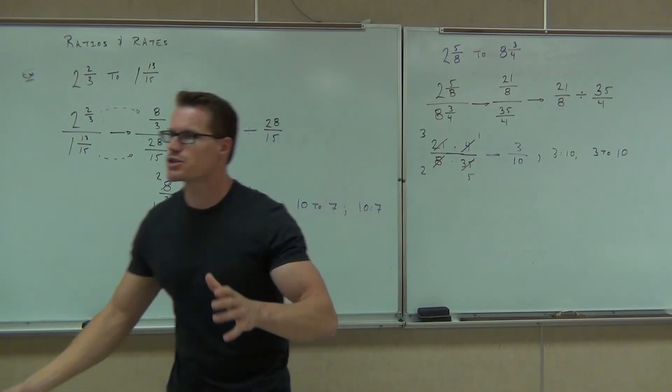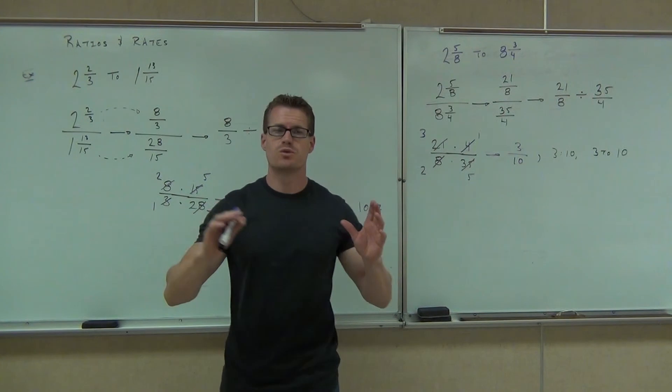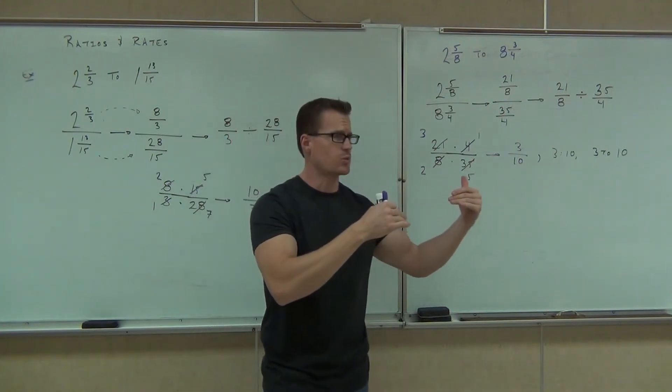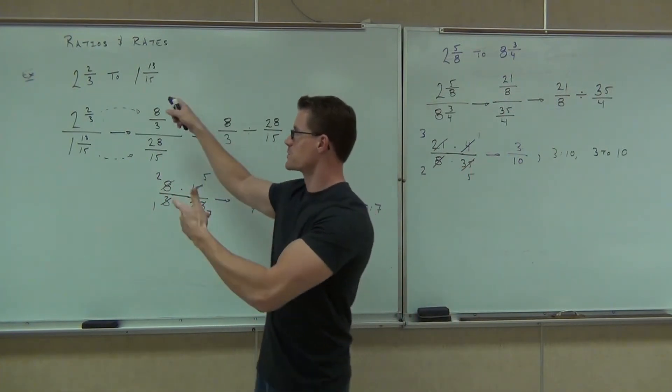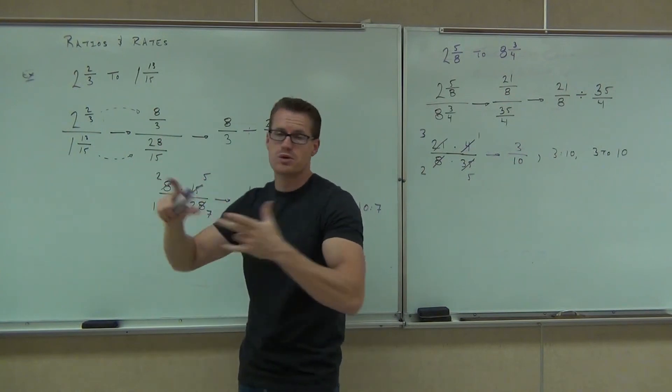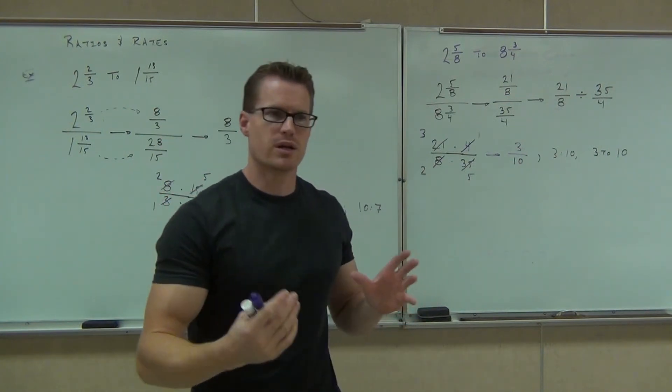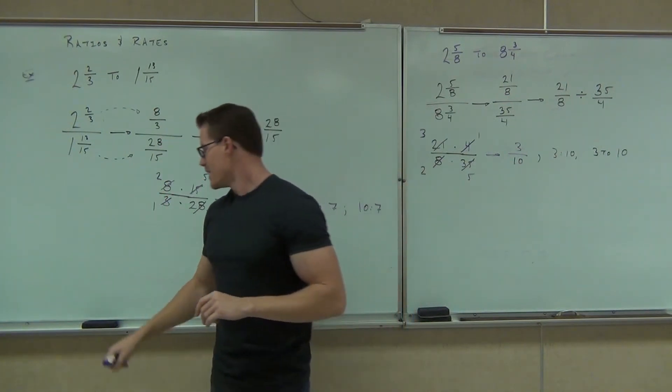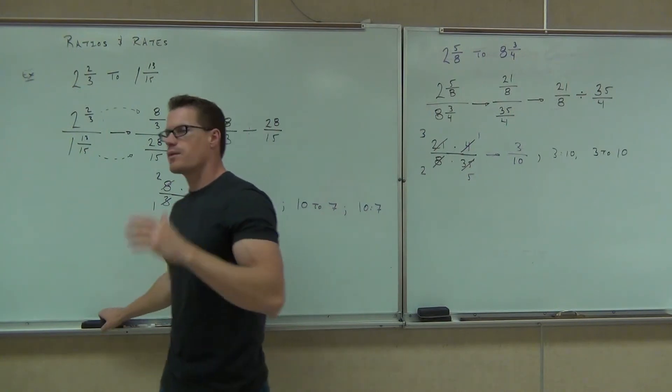So ratios, really, we're just comparing two numbers. That's it. Whether they're fractions or decimals, we now know how to deal with those decimals, move the decimal place. We now know how to deal with those fractions, change them to improper, we're dividing. There's no units that are written, and we for sure can reduce them. Now, the next thing we're going to talk about are these rates.